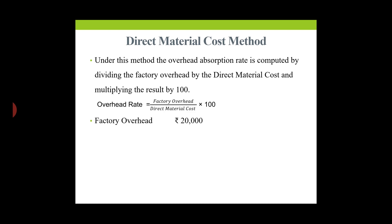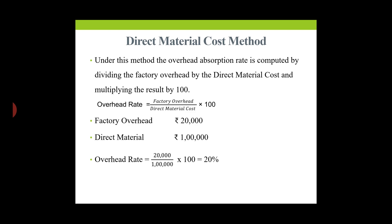For example, if factory overhead is Rs. 20,000 and direct material cost is Rs. 1 lakh, then overhead rate = 20,000 / 1,00,000 × 100 = 20%. So the overhead rate is 20% on direct material cost.